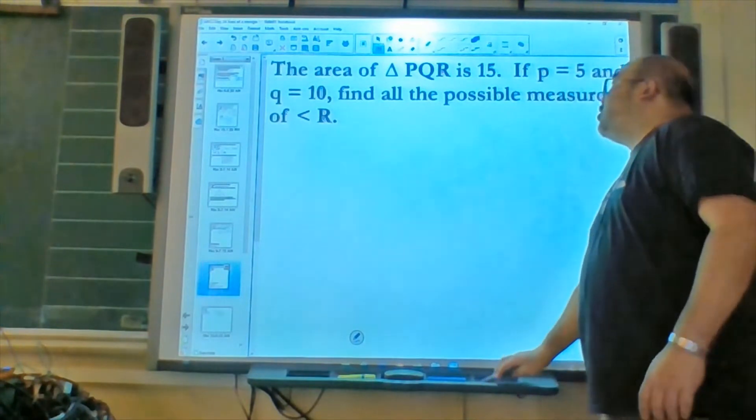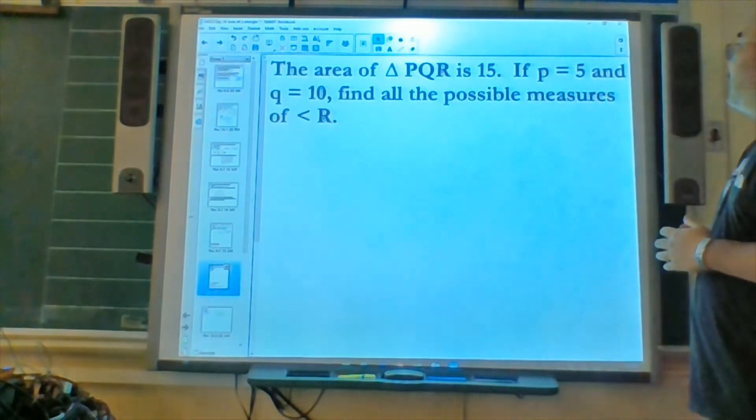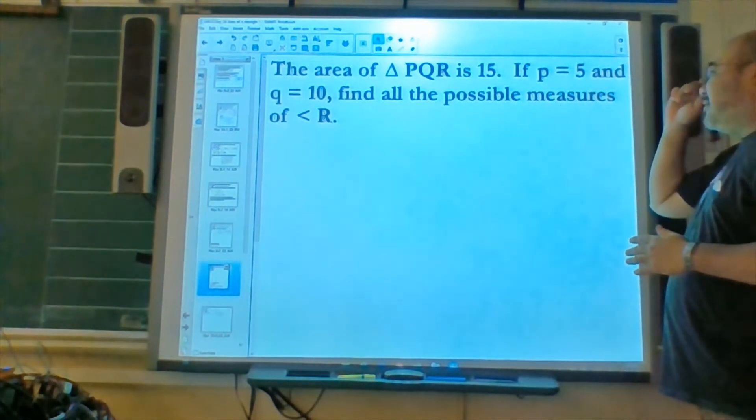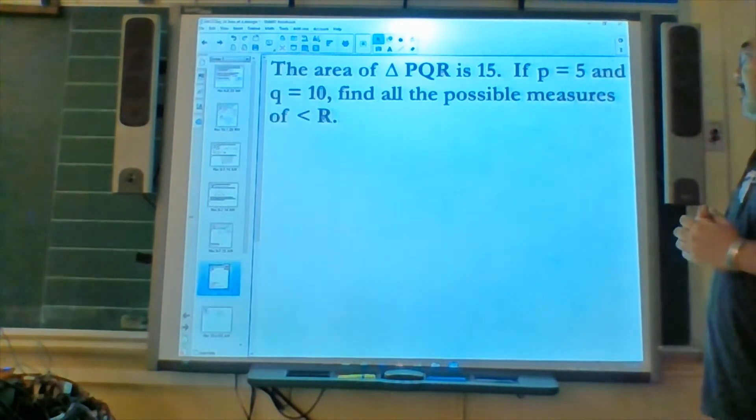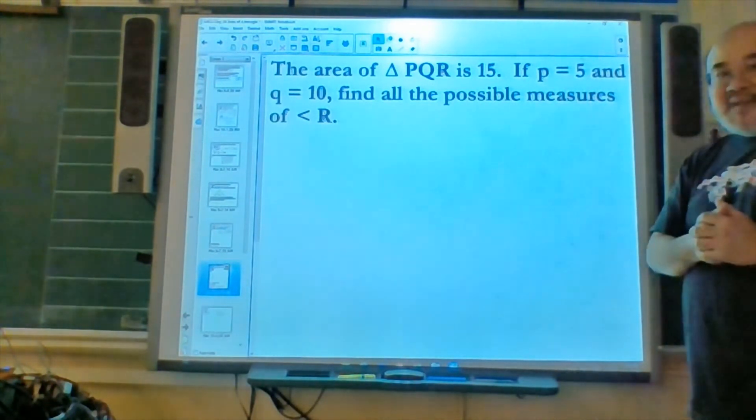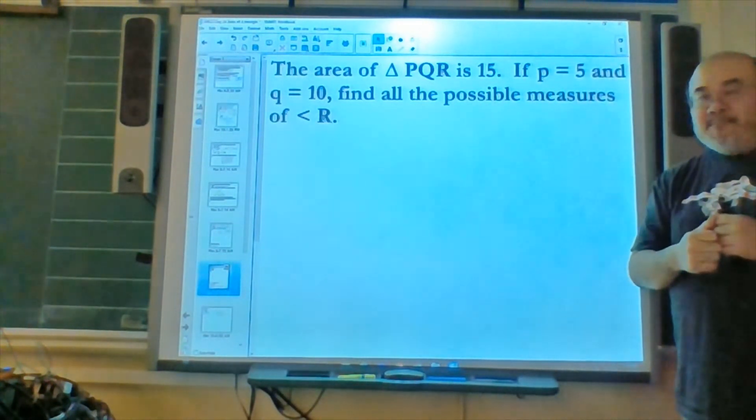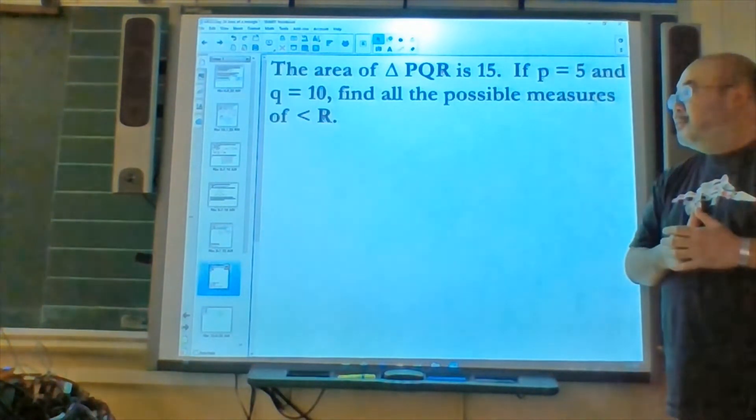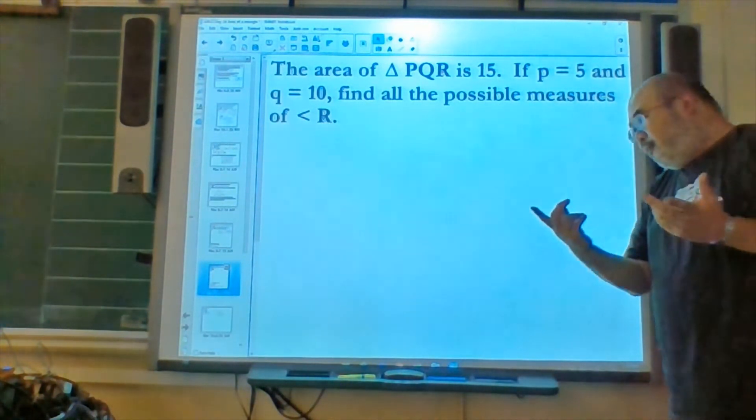For example, the area of triangle PQR is 15, side P is 5, and side Q is 10. Find all possible measures of angle R. All right. Let's take a look. First draw the triangle.